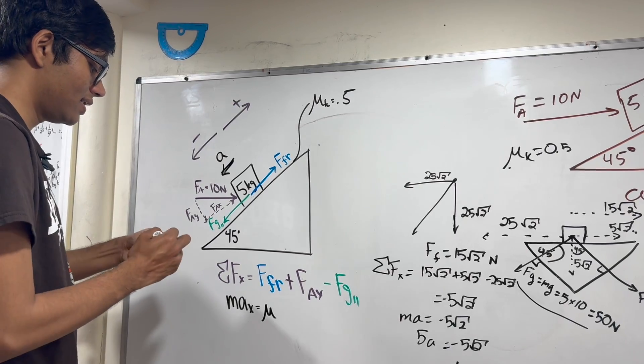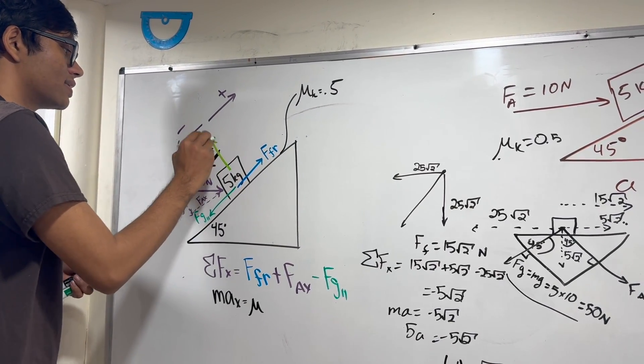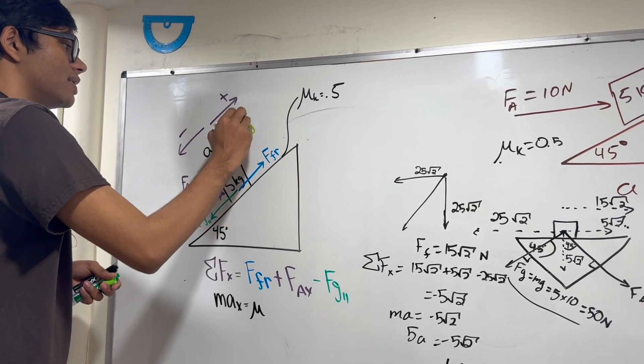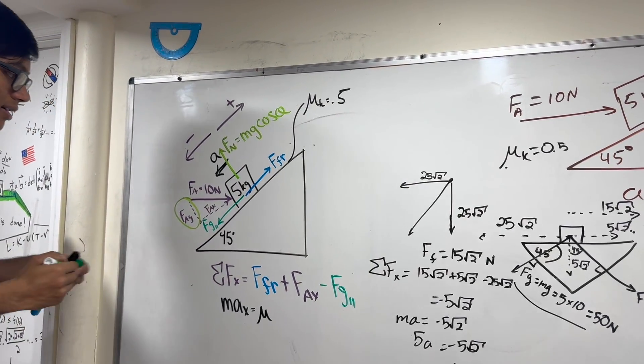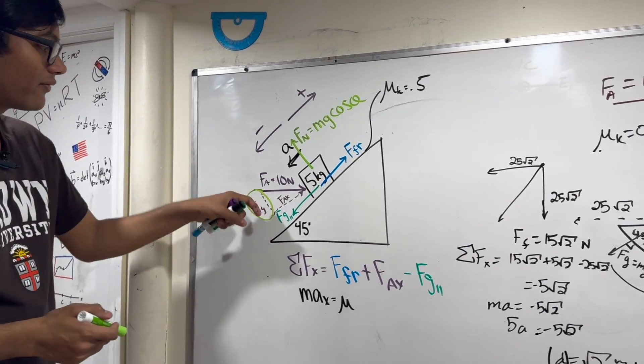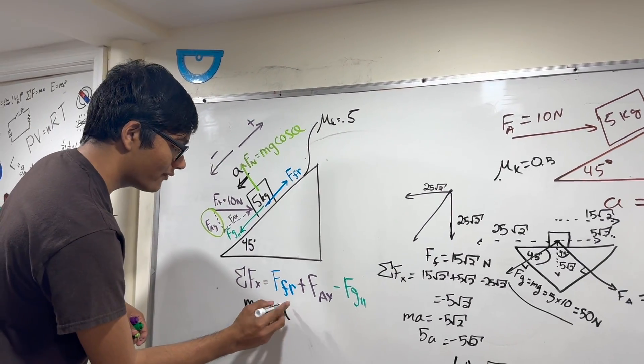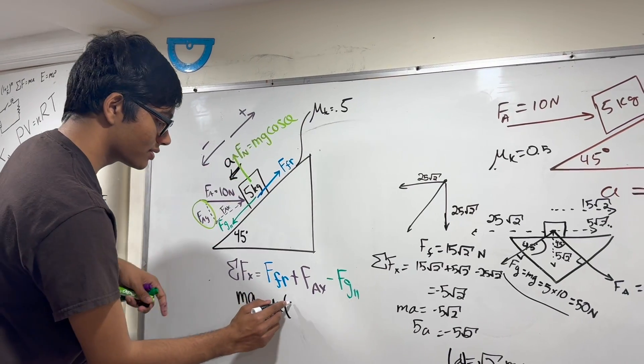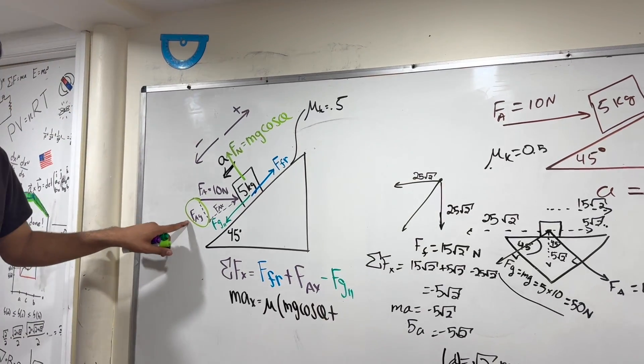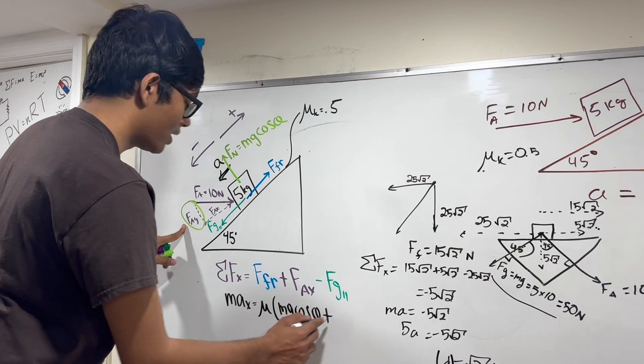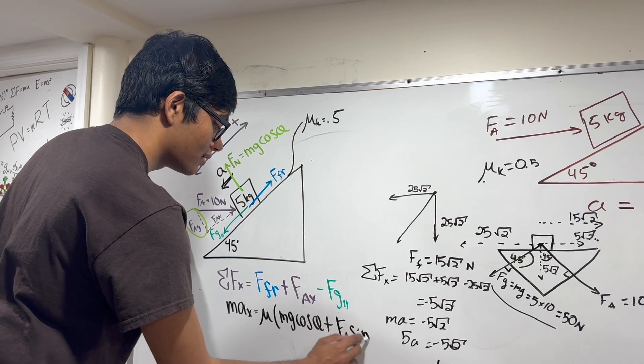What is FN? FN here is going to be bigger than it usually is. FN normally is MG cosine theta. But here it's going to be bigger because one component of our applied force is pushing down on the box. So we have mu FN, where FN is MG cosine theta plus the extra force we apply to the box, FAy. What is FAy? FAy is FA sine theta.